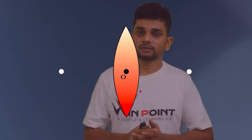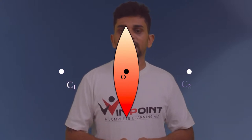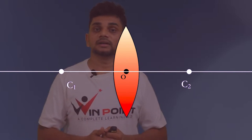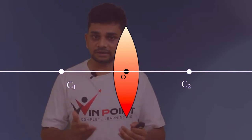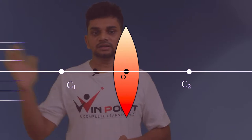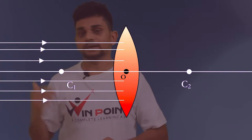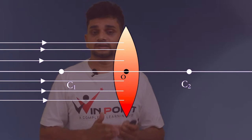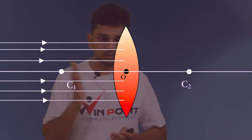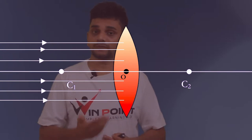There are two centers of curvature for a convex lens, C1 and C2. Now we are considering a number of light rays which are parallel to the principal axis. This is the principal axis and these rays are parallel to it. Here you can see all the rays are parallel to the principal axis. When these light rays pass through this convex lens, there is a change in medium, so there will be refraction.